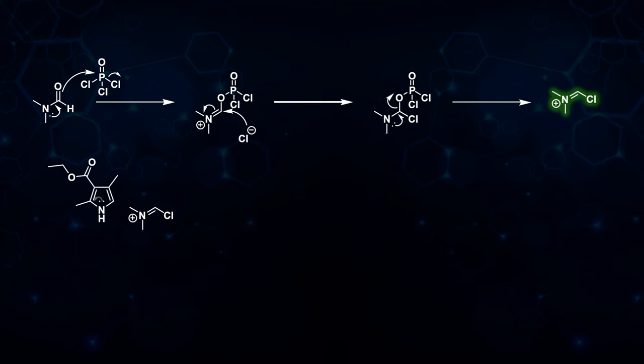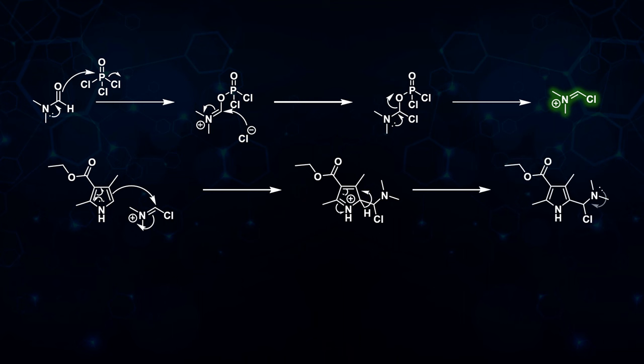The pyrrole ring acts as a nucleophile and attacks the electrophilic iminium ion. The pyrrole ring re-aromatizes, and then the lone pair on the nitrogen can kick out the chloride leaving group. It reforms the iminium cation. Upon workup, this iminium species hydrolyzes back to the aldehyde, giving the product of this reaction.